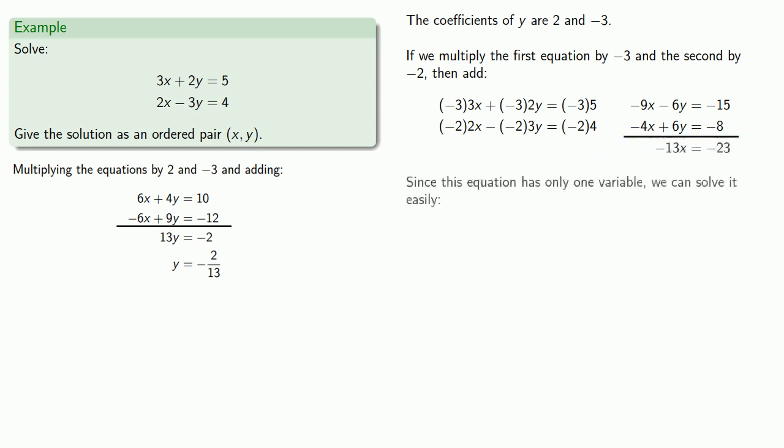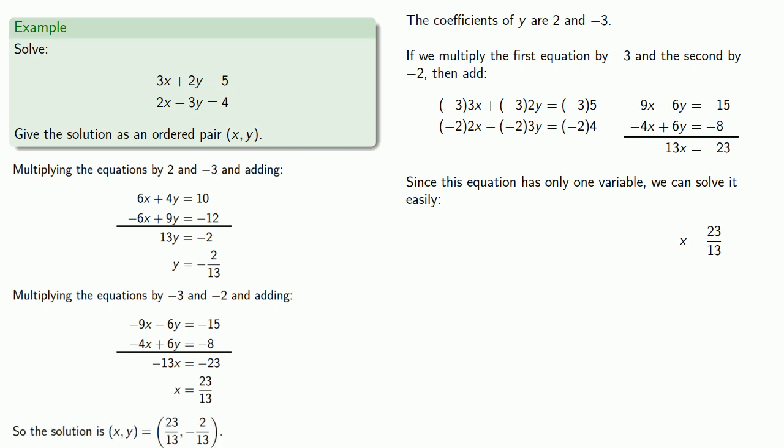And since this equation only has one variable, we can solve it easily. And so, as an ordered pair, our solution is 23 thirteenths, negative 2 thirteenths.